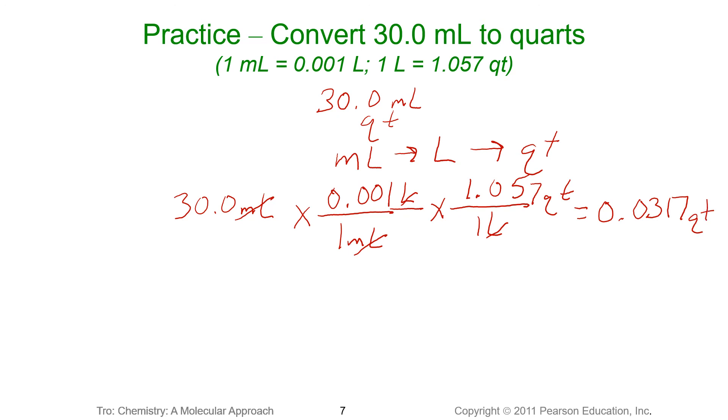Now we want to round. We started with three significant figures. Our answer has three significant figures. So our answer, we could leave this as 0.0317. Our units are correct. We were left with quarts as an answer. And milliliters are smaller than a liter. So we would expect to end up with something smaller than a quart. Now, the book lays out a very detailed way to do the problem. As you get more practice, you may not have to include all those steps in order to get the problem solved.